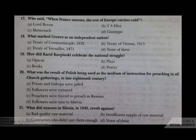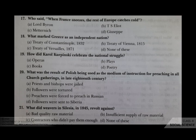The 21st question: what did the weavers in Silesia in 1845 revolt against? Your options are A bad quality raw material, B insufficient supply of raw material, C contractors who did not pay them enough, D none of these. The correct answer is C, contractors who did not pay them enough.